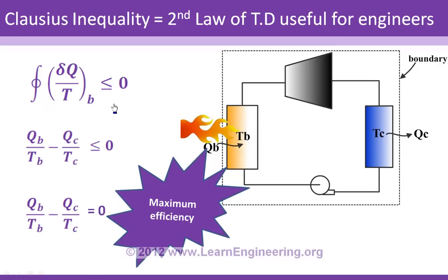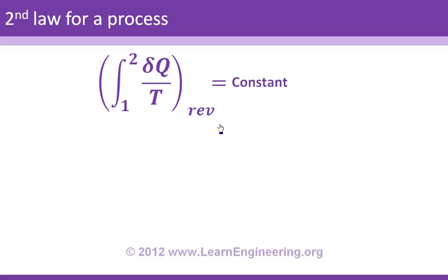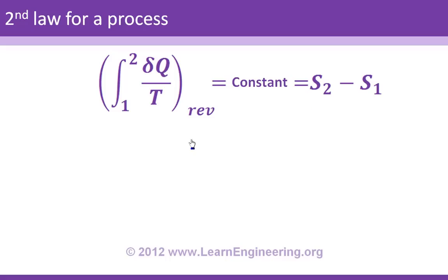This is the second law for a cyclic process. But most of the time you need to apply the second law to a process that is not cyclic. For a completely reversible process from state 1 to 2, the Clausius inequality shows that the integral dQ/T is path-independent — it depends only on the end states 1 and 2. Since it is path-independent, it can be expressed as a difference of a property, and that property is called entropy. The integral from 1 to 2 for a reversible process equals S₂ − S₁.